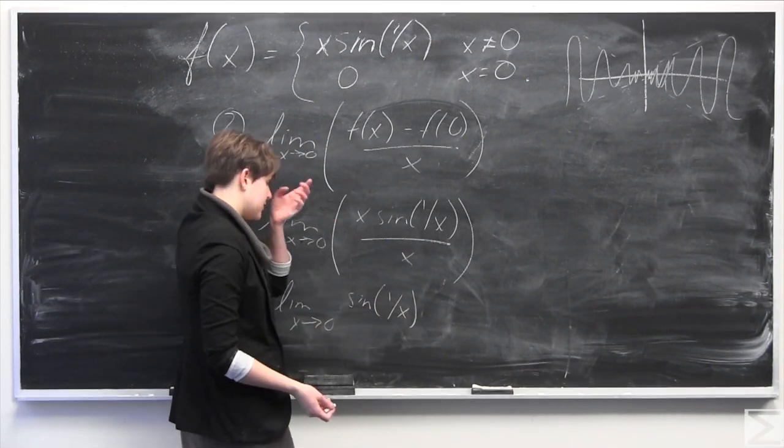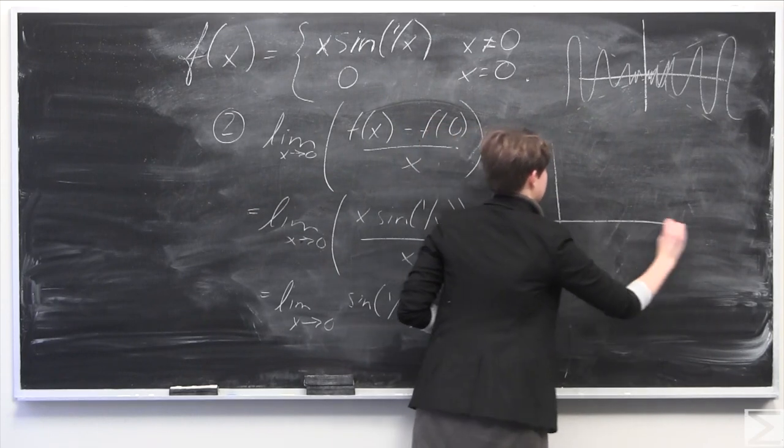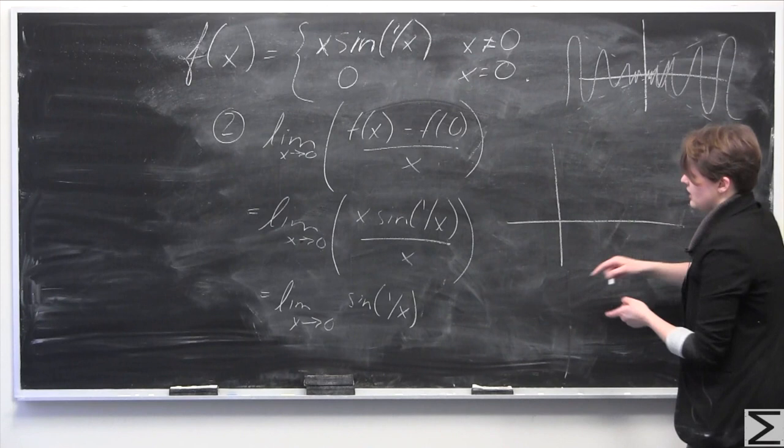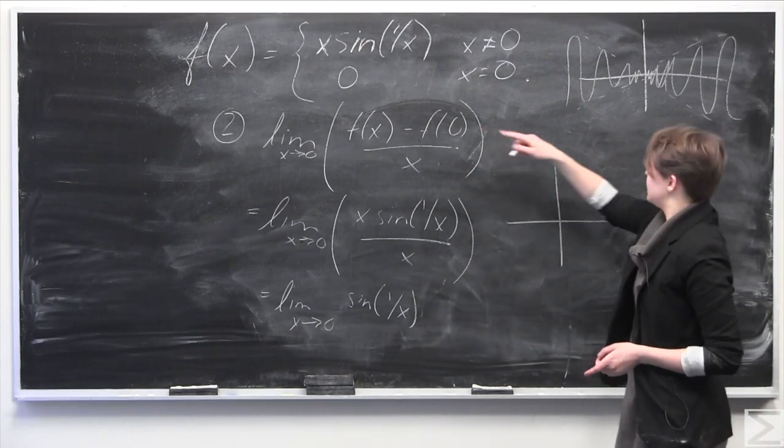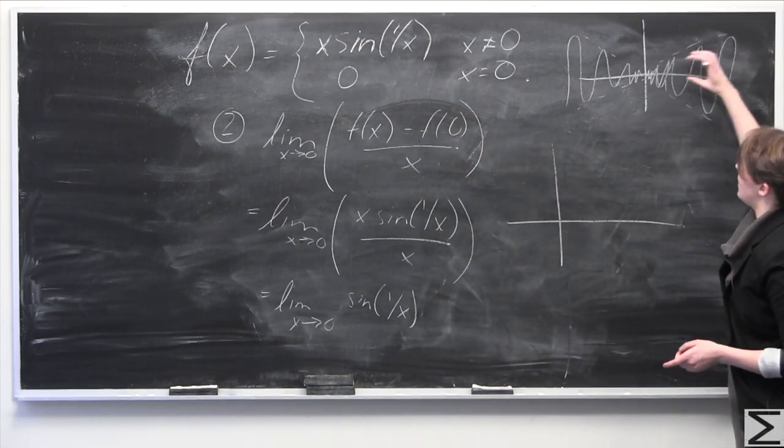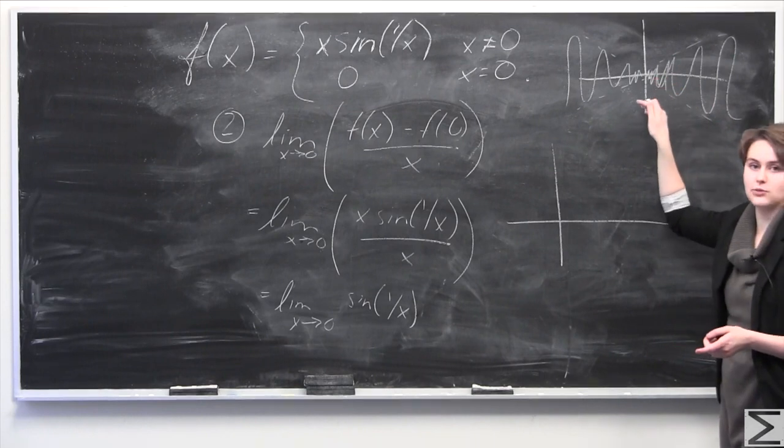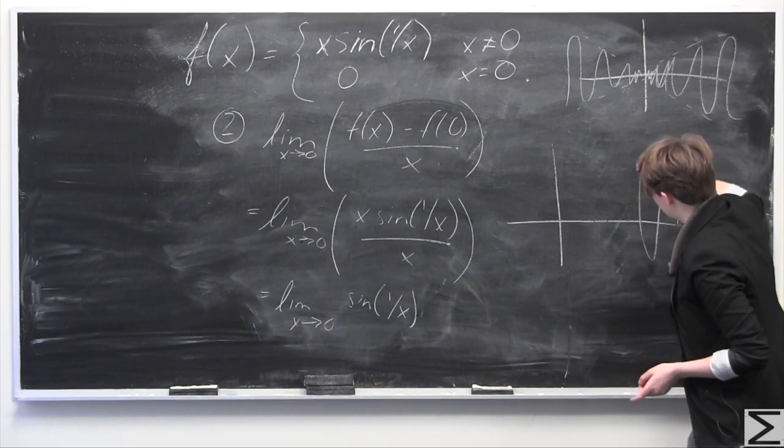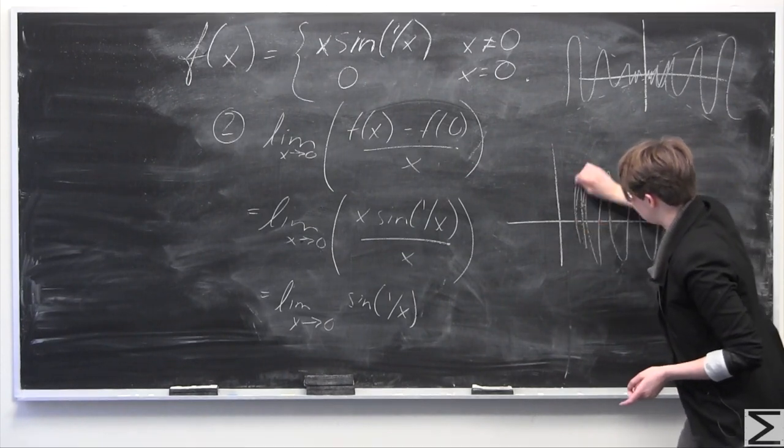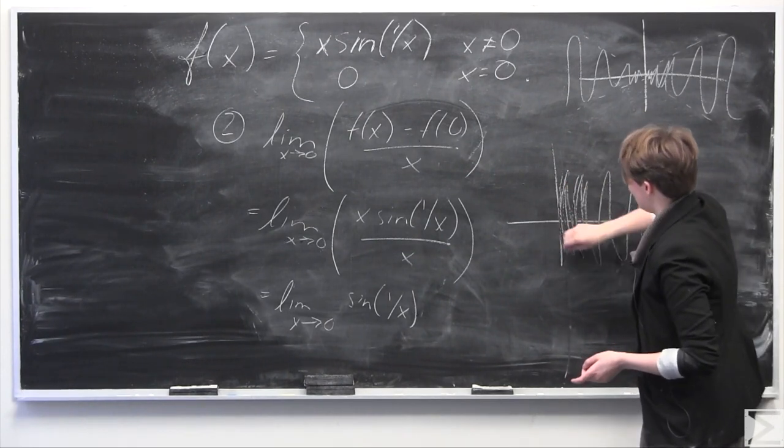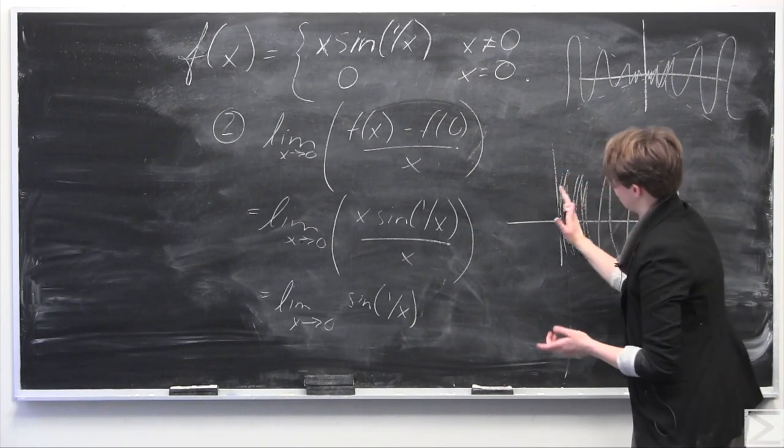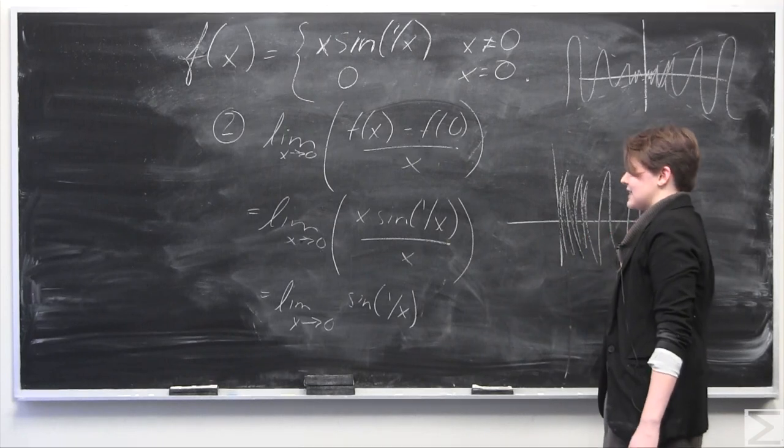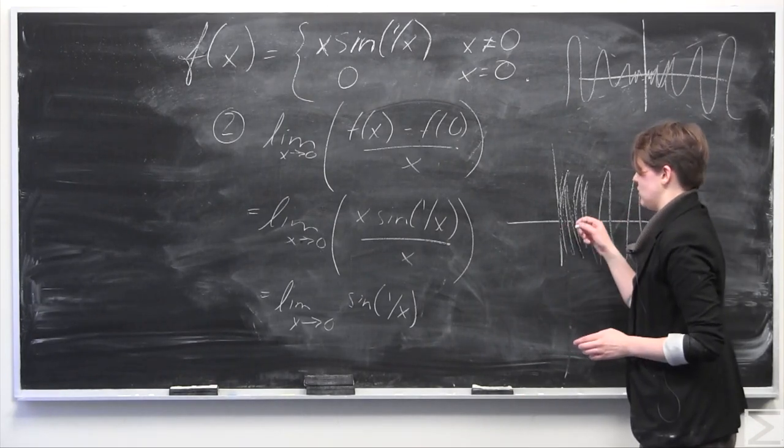But if you consider this function, it's easiest to see if you just graph the function quick. So the function is going to end up, so this is different than x times sine of 1 over x, which looks like this. You have this envelope here bringing this into x equals 1. So instead here, you're going to get something that looks like this. And it will just keep oscillating an infinite number of times as it is approaching x equals 0.